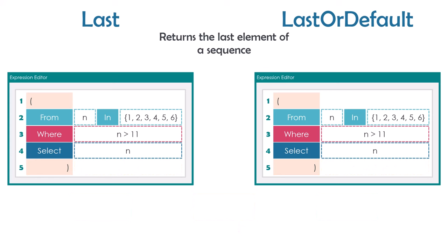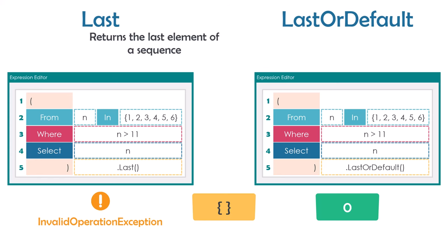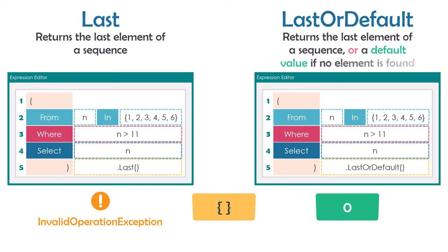Now assume I have a condition to get numbers greater than 11. The result of the query is empty because no number is greater than 11. Using the Last operator on an empty sequence will throw an exception of type InvalidOperationException because there are no elements. But using LastOrDefault on the same empty sequence returns zero and no exception is thrown. That's because the query is on an integer array, and the default value of integer is zero — so LastOrDefault returns the default value when the sequence is empty.